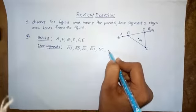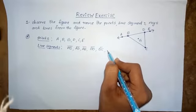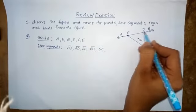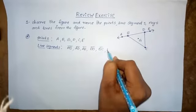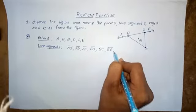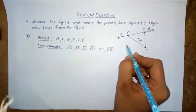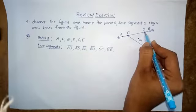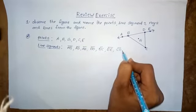Next, from point B to E — BE is a line segment. Next, from C to D — CD is a line segment.